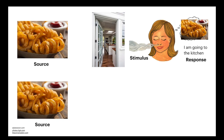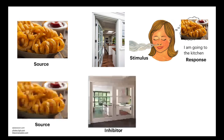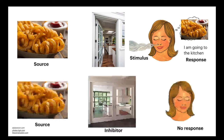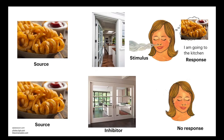In a different scenario, someone is making curly fries in your kitchen but the door is closed. Even though they smell good, you have no idea they're there because you don't get the smell, and therefore you don't respond. This is similar to the concept of an inhibitor — something that stands in the way between the stimulus and the cell, so the molecules won't be able to bind to the cell surface because the inhibitor is blocking the way.